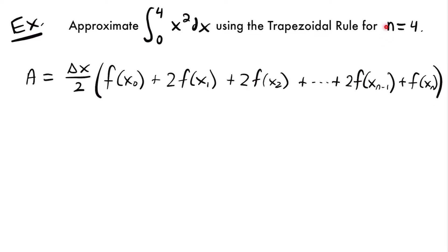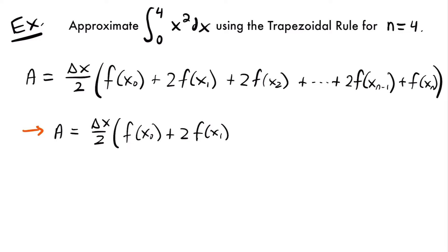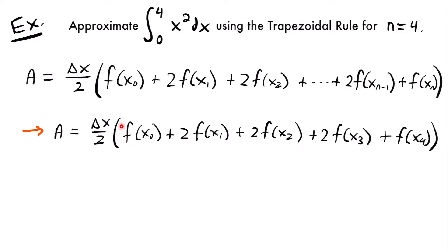In this case n is equal to 4, so our last value x sub n will be x sub 4. Applying the trapezoidal rule, the area equals delta x divided by 2 times f of x sub 0, plus 2 times f of x sub 1, plus 2 times f of x sub 2, plus 2 times f of x sub 3, plus f of x sub 4. Our first and last terms are multiplied by 1, and all middle terms are multiplied by 2.